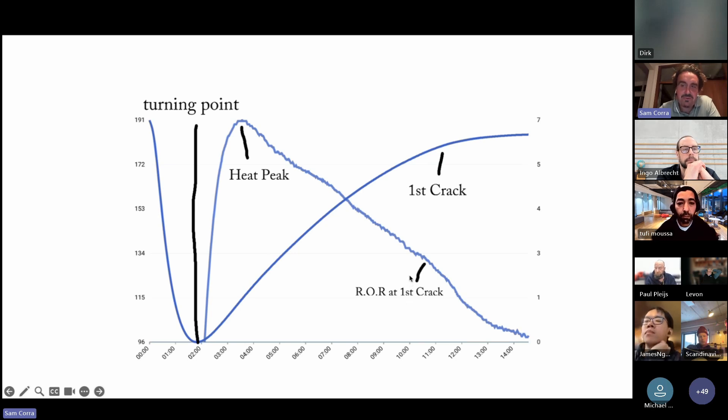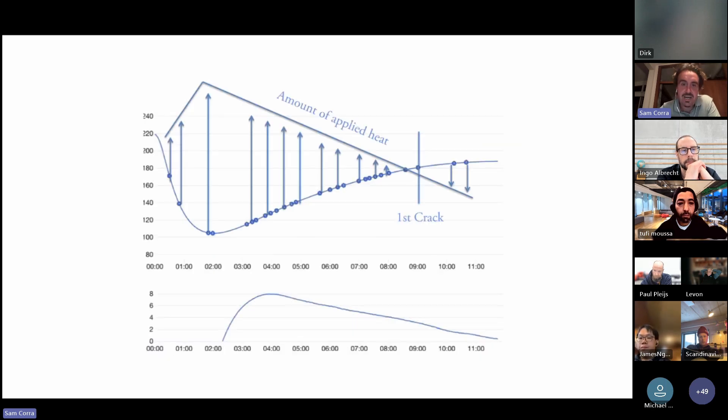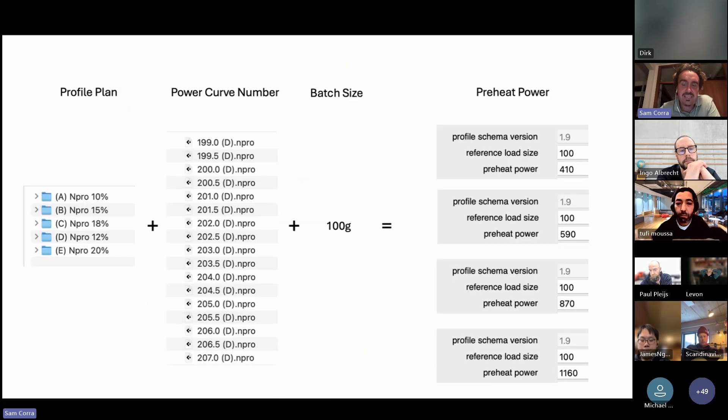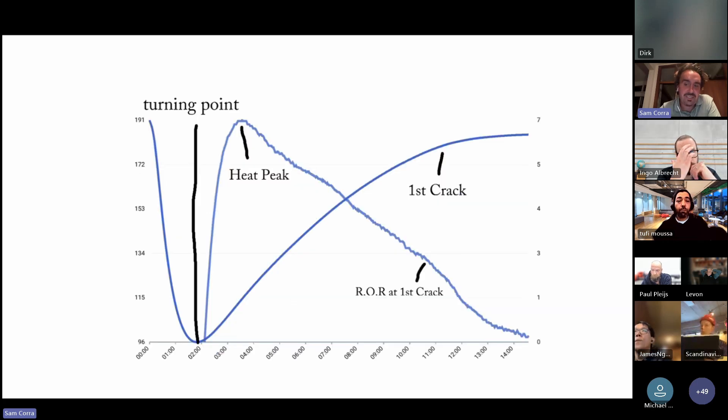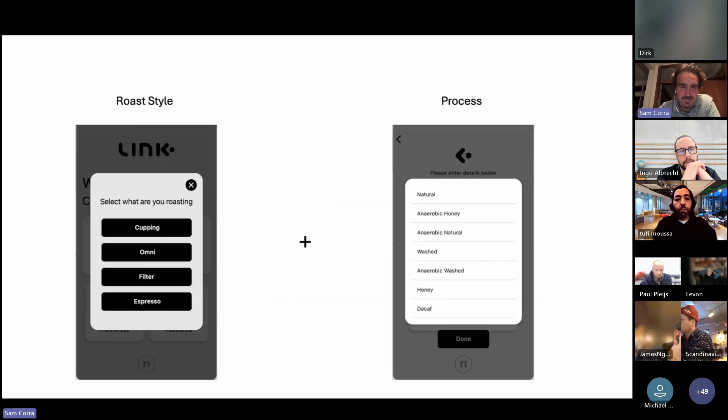It definitely gives you a nice handy tip of knowing, okay, I've got this stage, how I'm going to manage my heat. And then in that stage, just as you're about to come into first crack, having a target of where you should be sitting increase-wise in order to make sure you have control over the roast, similar to how the link system is doing that automatically for you. You can translate data from these elements to make sure you have control.